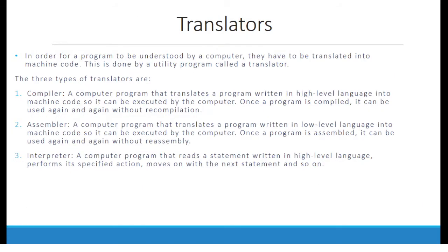In order for a program to be understood by a computer, it has to be translated into machine code. This is done by a utility program called the translator. The three types of translators are: 1. Compiler — a computer program that translates a program written in high-level language into machine code so it can be executed by the computer. Once a program is compiled, it can be used again and again without recompilation.